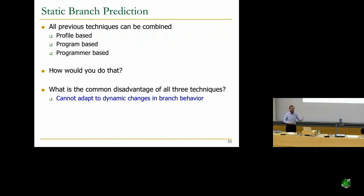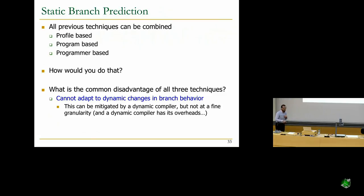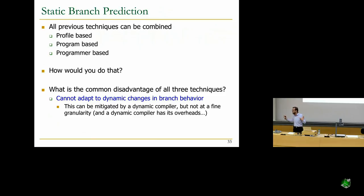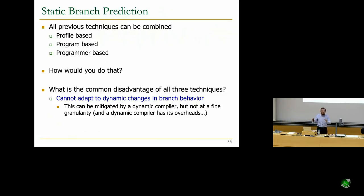You could dynamically recompile code to mitigate some of these problems, as Java's JIT compiler or Microsoft's CLR do. When program behavior changes, the dynamic compiler recompiles with updated hint bits. But this has overheads — you need to instrument the program, and tracking which direction branches are going at runtime is expensive. The Transmeta processor also did this with code morphing software, dynamically compiling x86 into an internal VLIW ISA.